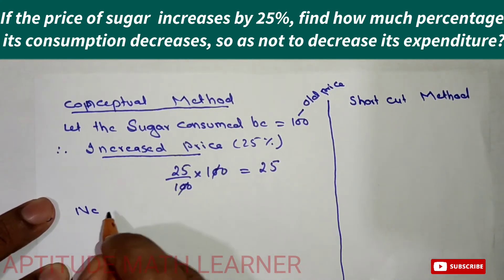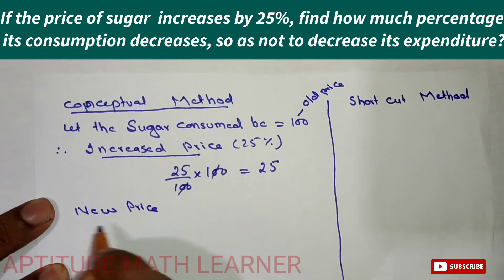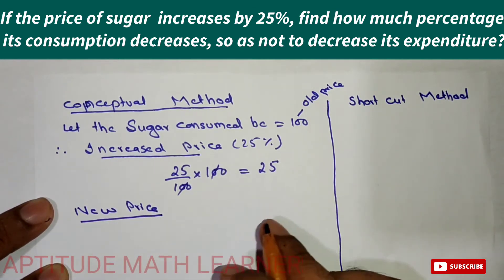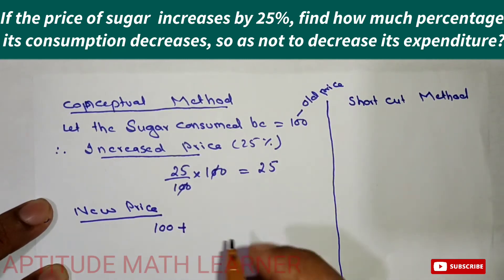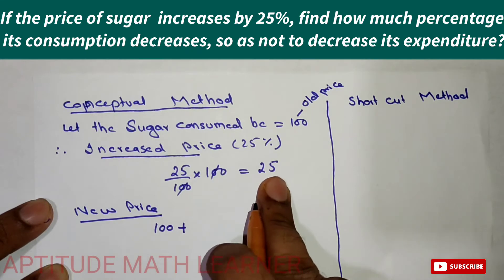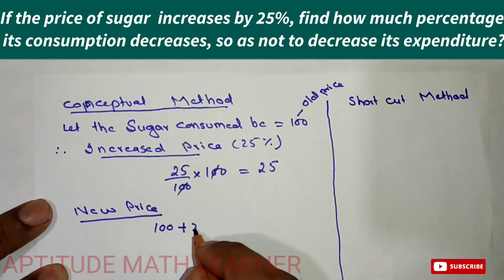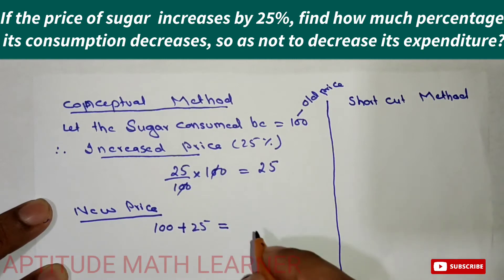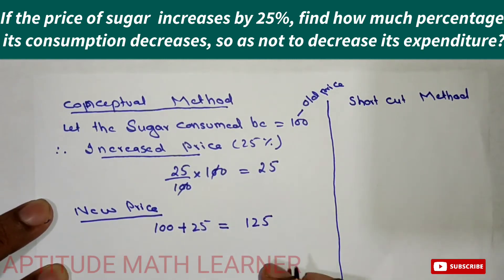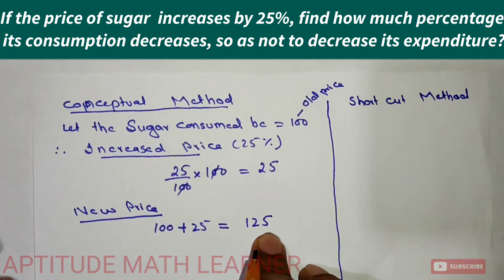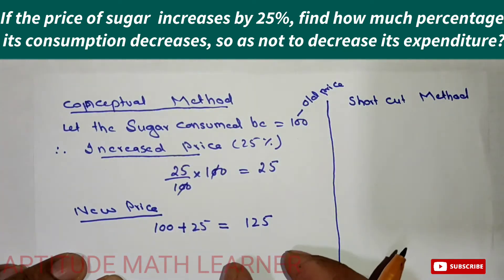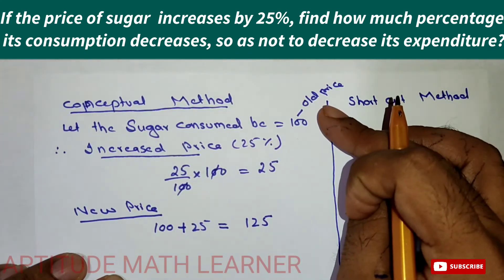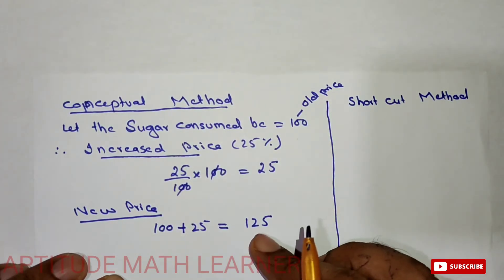Now the new price: the old price was 100, plus the increase of 25, so the new price we get is 125. This is the new price and 100 was the old price.